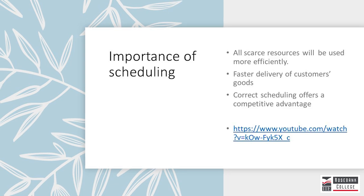In most cases, organizations that do short-term scheduling use powerful computer software for this task. Examples of such software are SAP, BAAAN, and QMusic, among other packages. Due to the capabilities of this software, the satisfaction of customers has become a lot easier for organizations to achieve, and organizations that make use of scheduling software have a competitive advantage over competitors that do not.